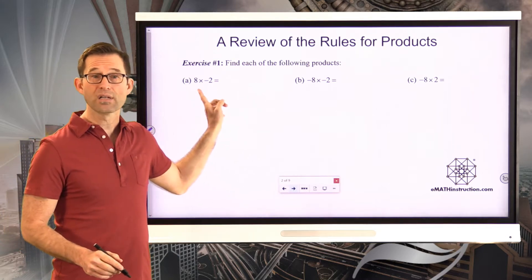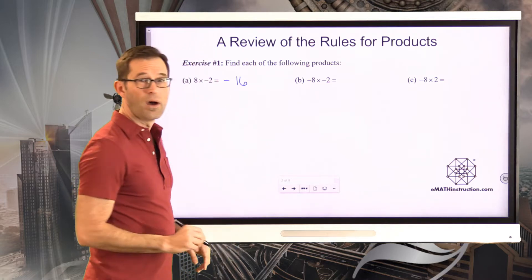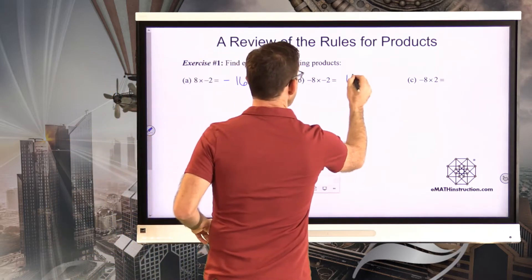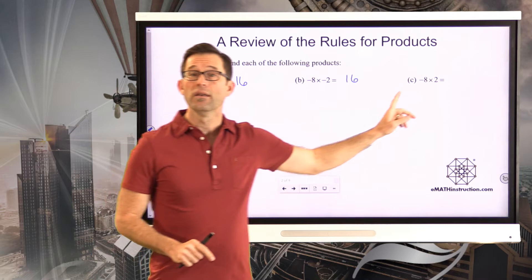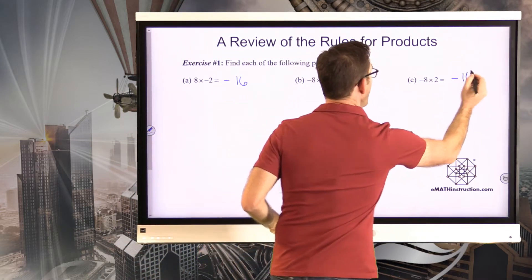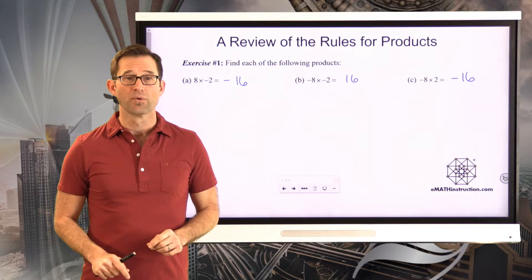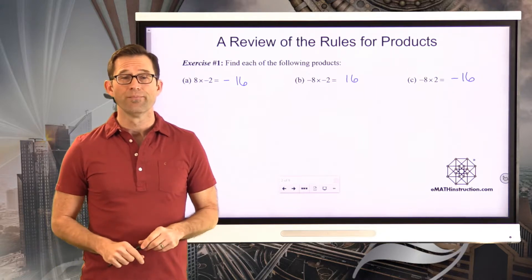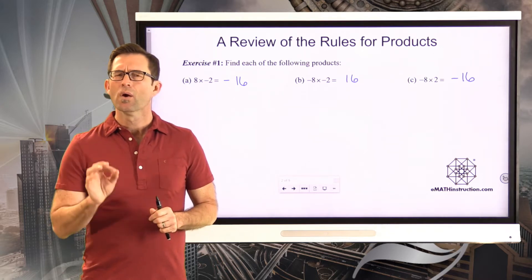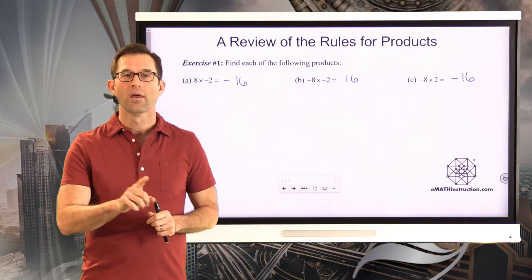8 times negative 2 — positive 8 times negative 2 — gives us negative 16. On the other hand, negative 8 times negative 2, because they're both negative, gives us positive 16. And finally, negative 8 times positive 2 gives us negative 16. Hopefully those were easy, because knowing the rules of multiplying signed numbers together is pretty simple. Before we move on to division of signed numbers, we want to make sure we connect multiplication and division.